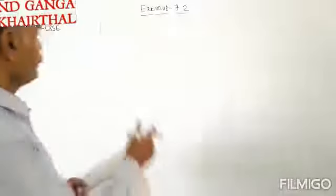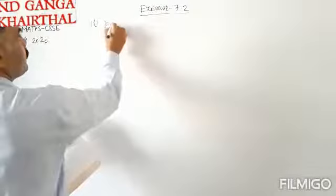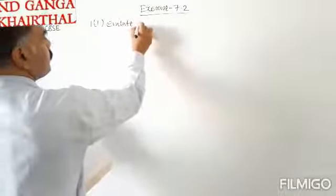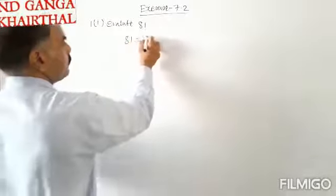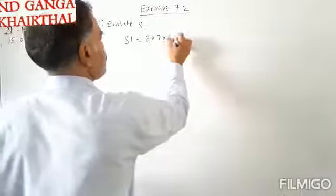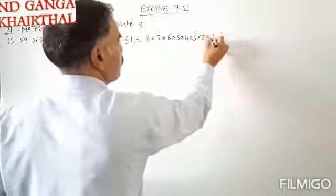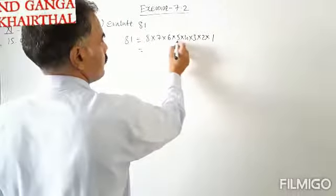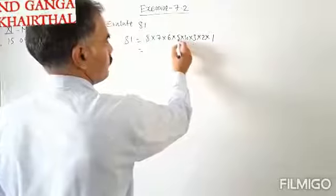The first part of question 1 is to evaluate factorial 8. So factorial 8 equals 8 into 7 into 6 into 5 into 4 into 3 into 2 into 1. Multiplying step by step: 8 into 7 is 56, into 6 is 336, into 5 is 1680, into 4 is 6720, into 3 is 20160, into 2 is 40320.